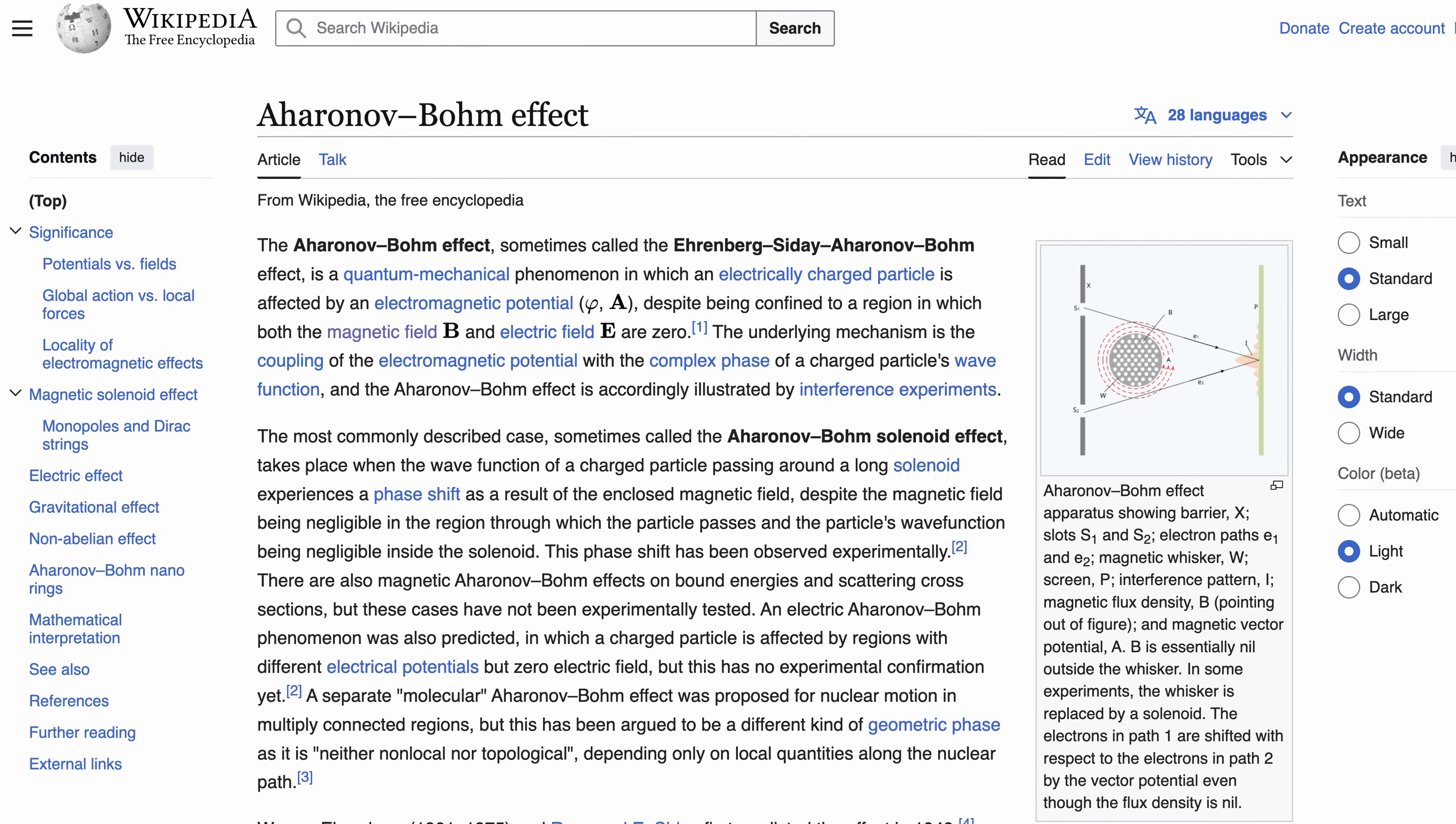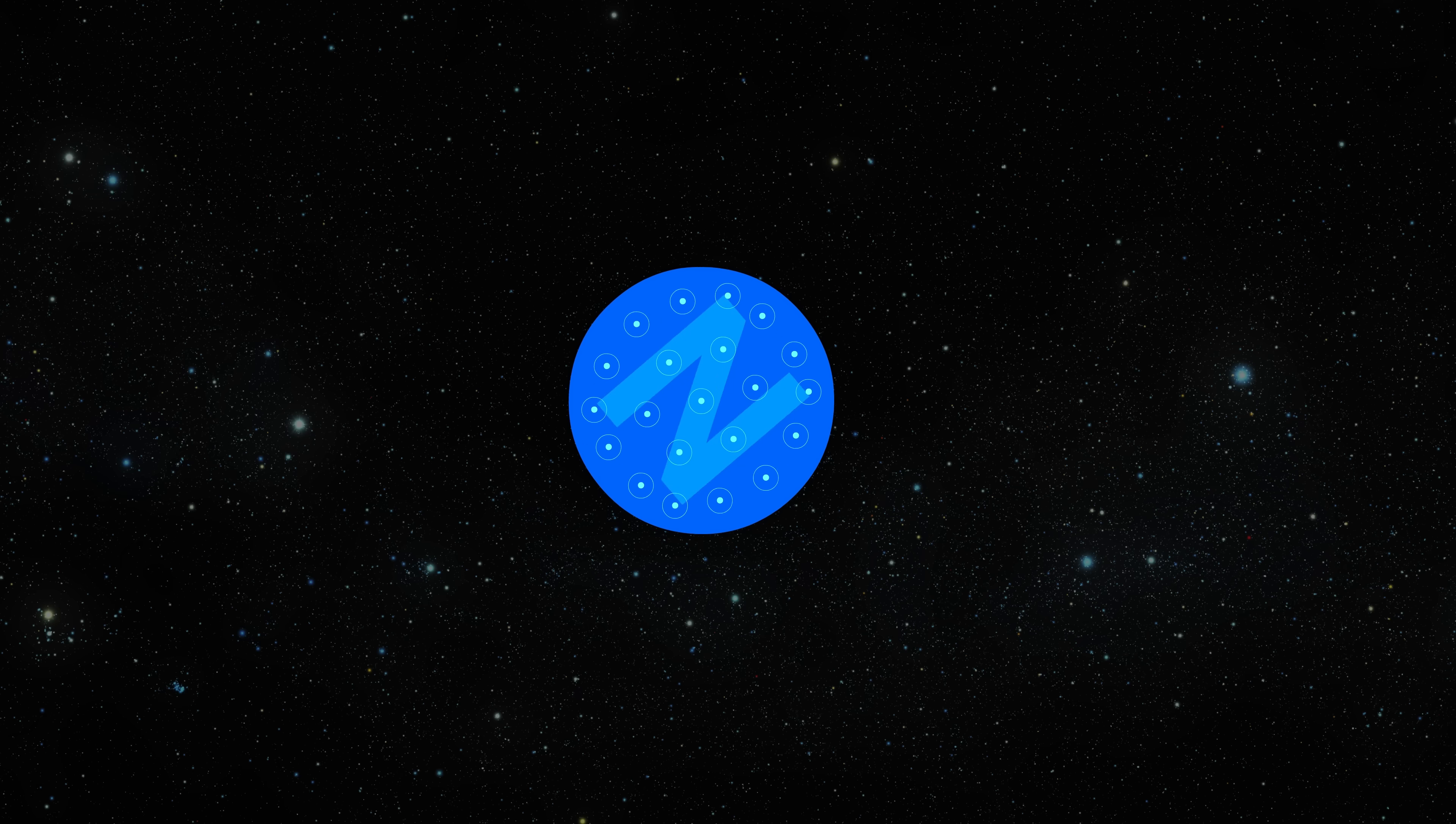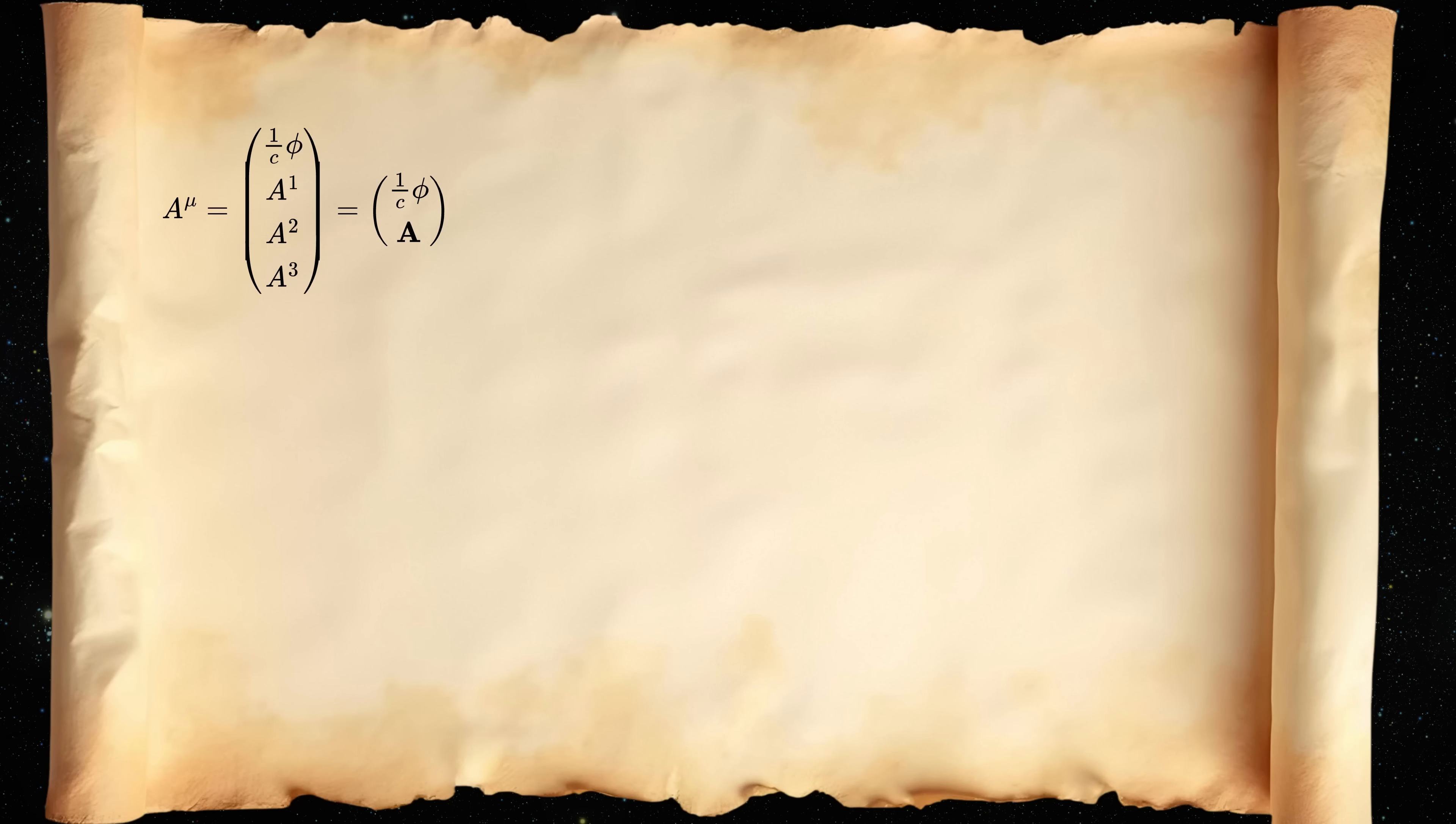But then there is this Aharonov-Bohm effect, which tells us that it is the electromagnetic four potential that influences the quantum wave function, and not the electric and magnetic fields. There is also the Faraday paradox, in which you can't experimentally tell, if you have a rotating magnet, whether the field lines rotate with the magnet, or are stationary. Both of these views predict the same observed phenomena. But saying that it's the electromagnetic four potential that is real, is still not quite right. Because if you dig really deep into this rabbit hole, you would eventually find out that even these four components are not completely independent.